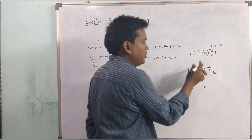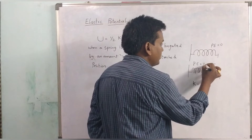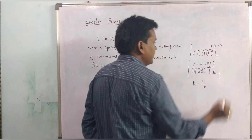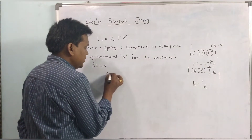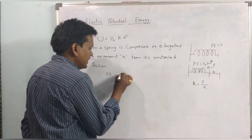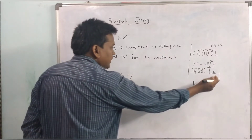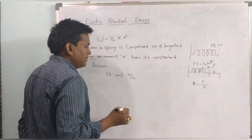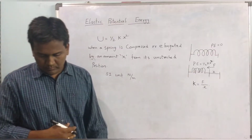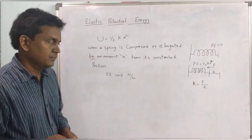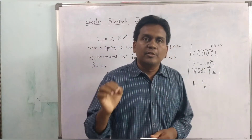The potential energy of the compressed spring is U equal to half k x square. The SI unit of spring constant is force divided by displacement — Newton per meter.